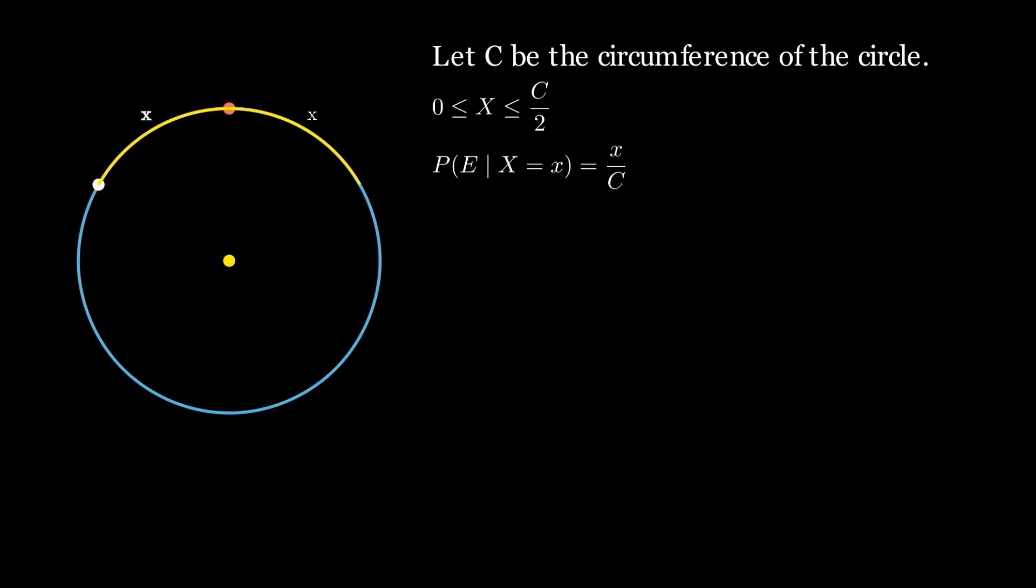So, the favorable arc for the second point has a length 2X. Hence, the cumulative distribution function of X is 2X over C. Differentiating the cumulative distribution function, we obtain the probability density function as 2 by C.